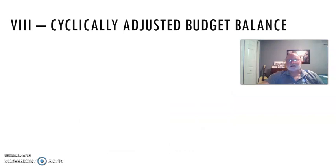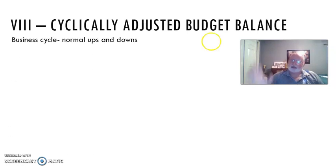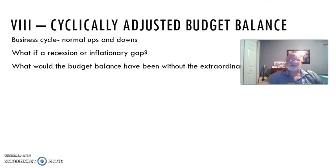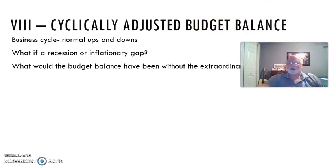Next topic is the concept of the cyclically adjusted budget balance. If you remember what the budget balance is, well, we just did it. If you remember the business cycle, I'm doing this thing with my hands. I compare it to mountains and valleys. It's the normal ups and downs of the business cycle. And so here's what happens. Let's say you're running a budget deficit of $100. Some people would say, well, in a good year, we run a deficit of $100. What if it's a recession and we run a deficit of $180? Well, that extra $80 is because it's a recession. In a normal year, it would have only been $100. So what they have decided to do, this concept of the cyclically adjusted budget balance, is they have decided to say, hey, what would the budget balance have been without the extraordinary circumstances?